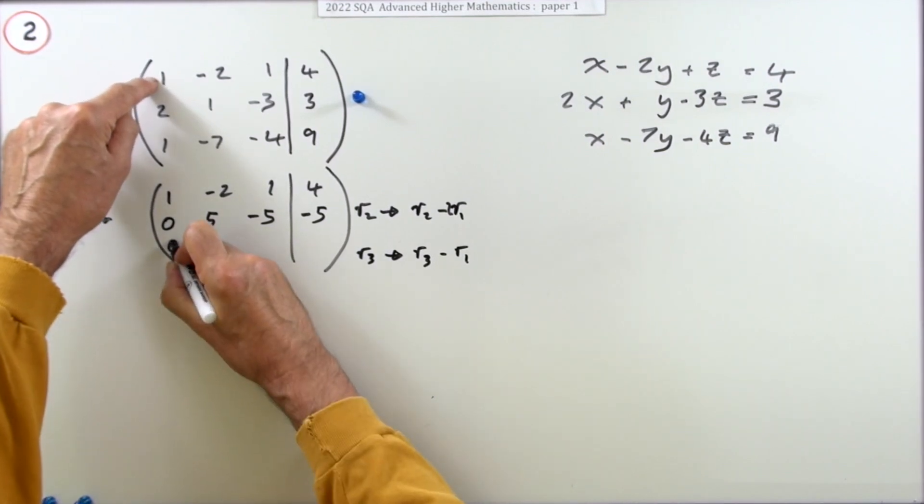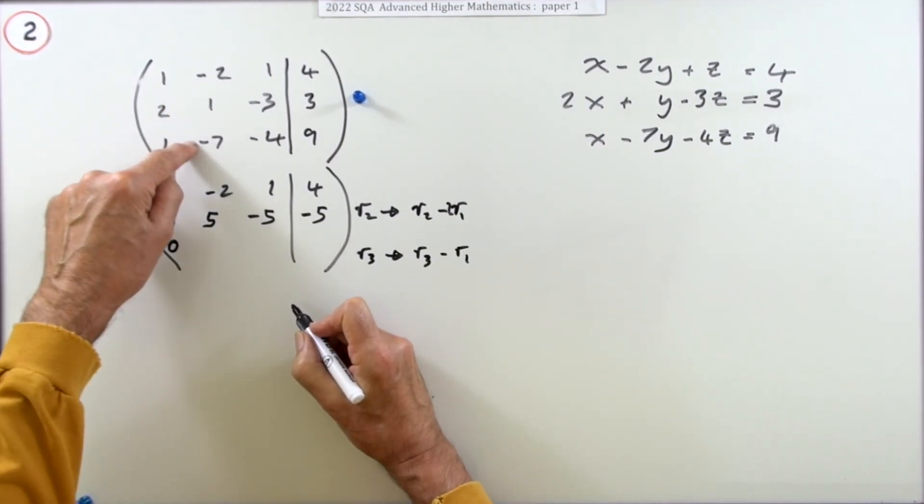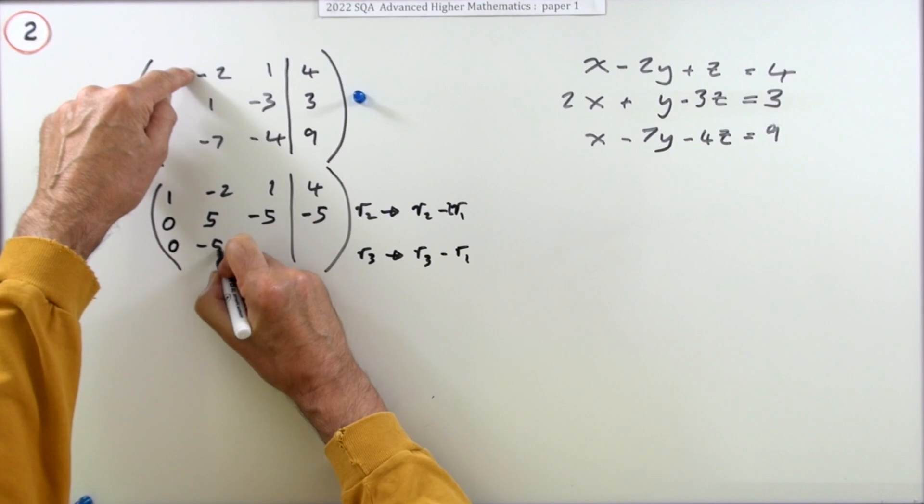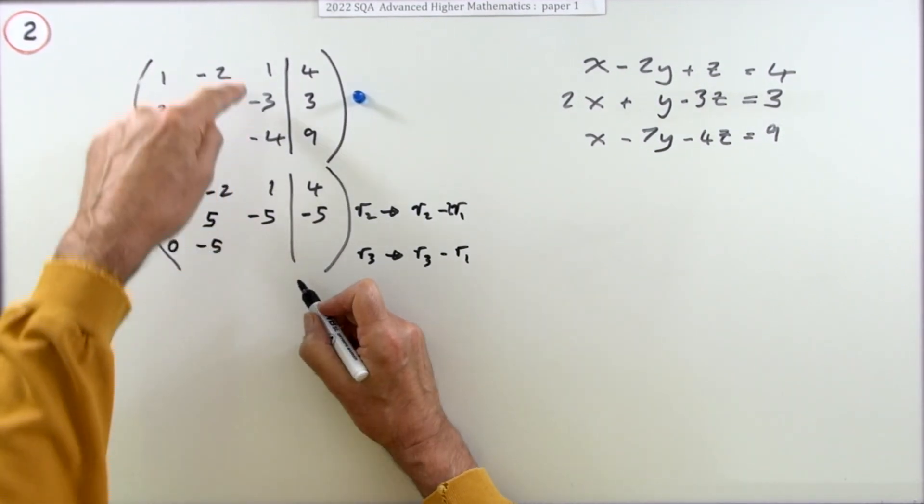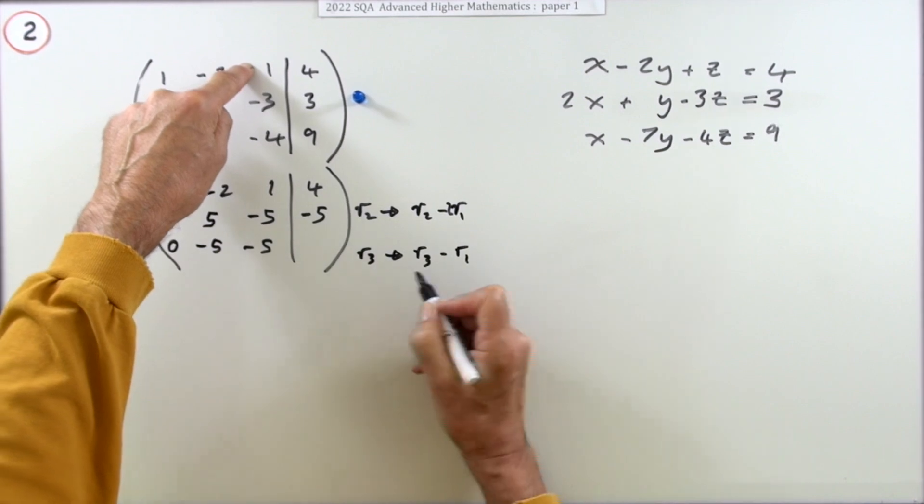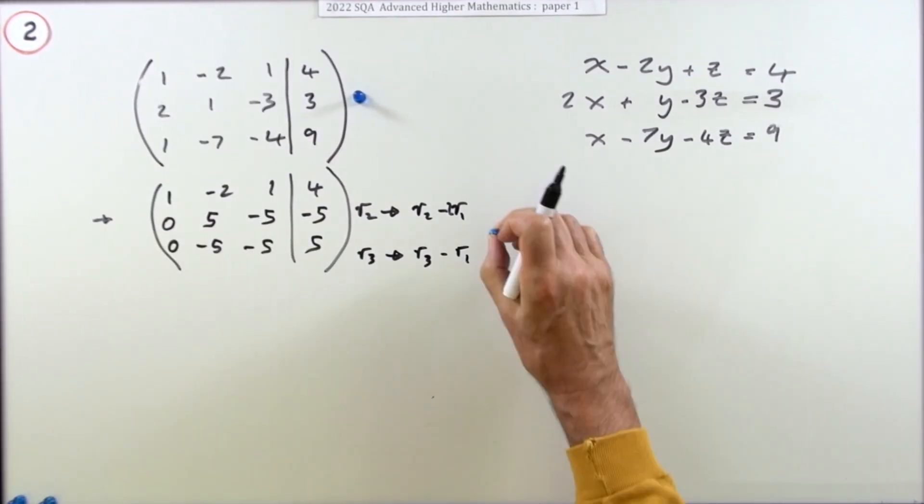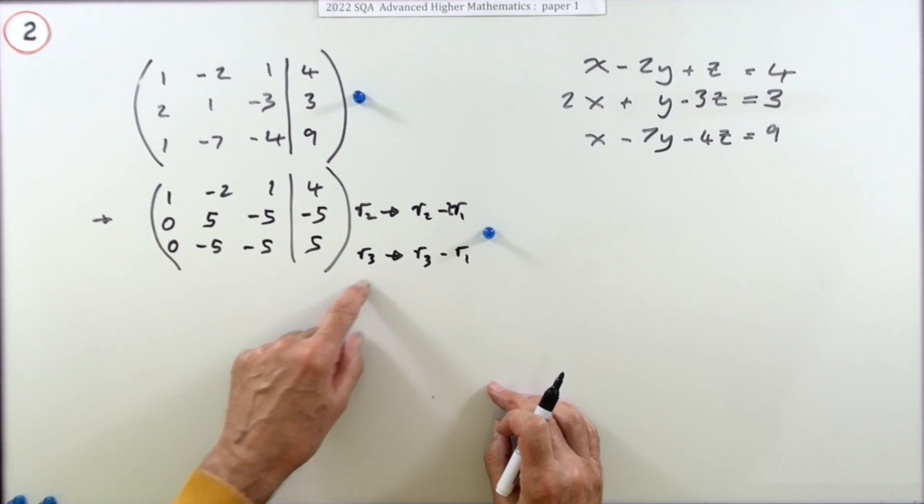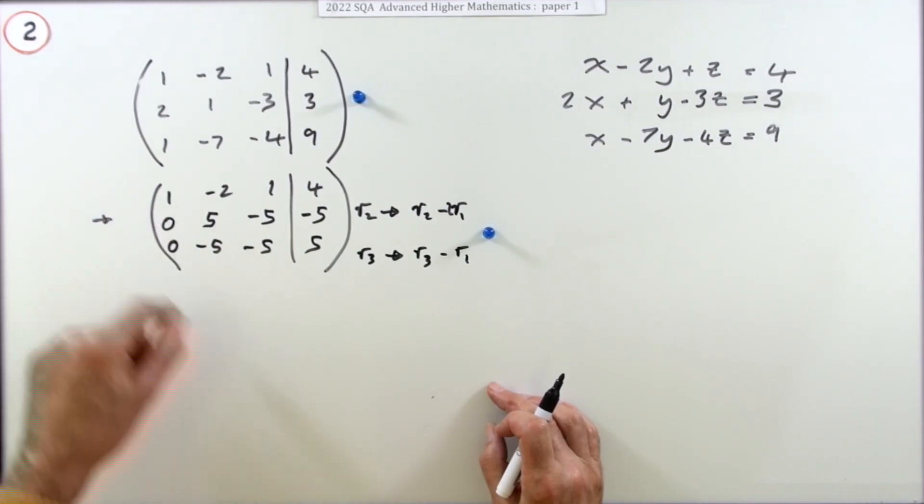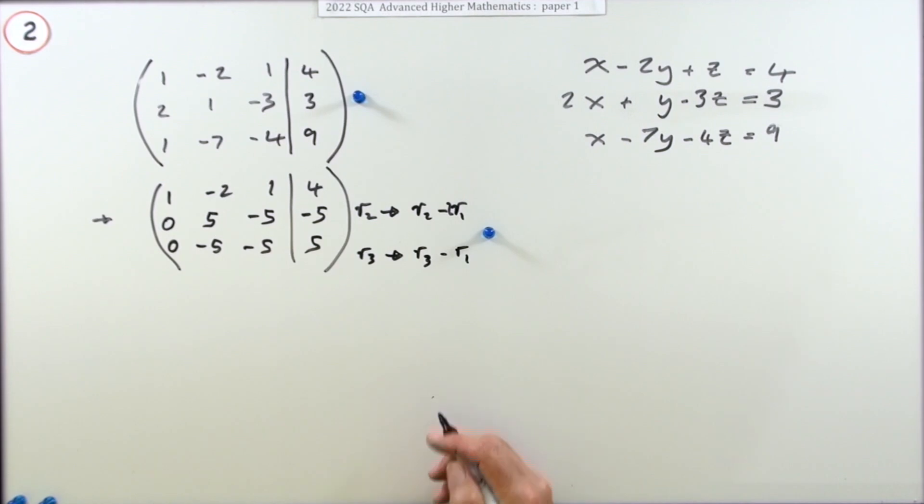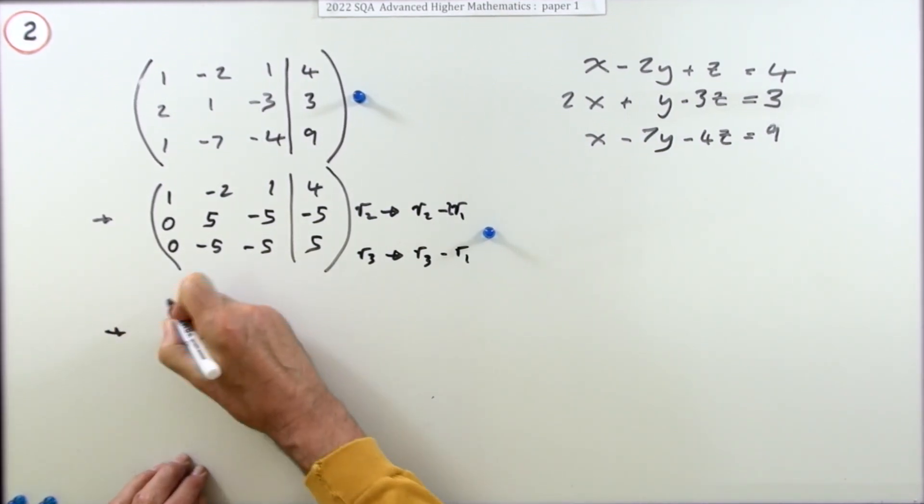-7 plus 2: -5. -4 take away 1: -5. 9 take away 4: 5. Now doing that, carrying out the elementary row operations to get two leading zeros heading towards upper triangular form, gets you the second mark. There's only one more stage left now.